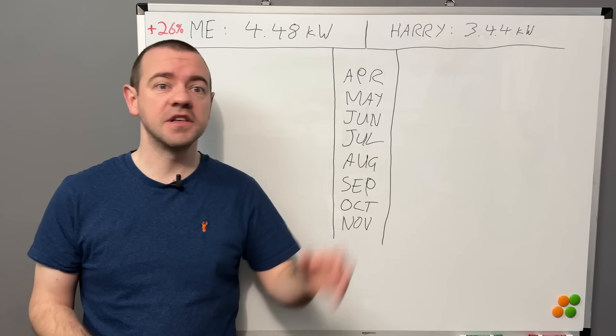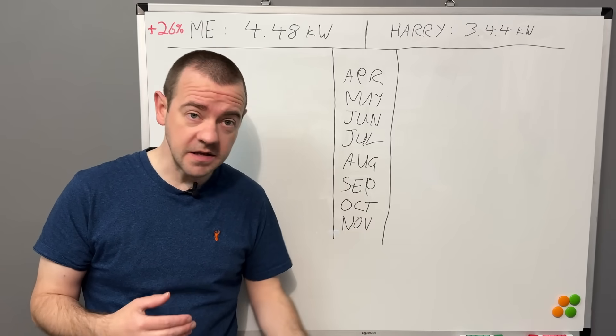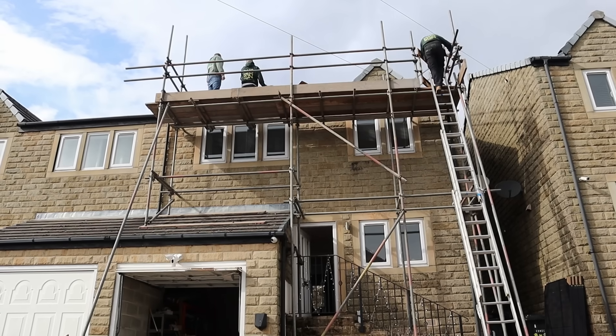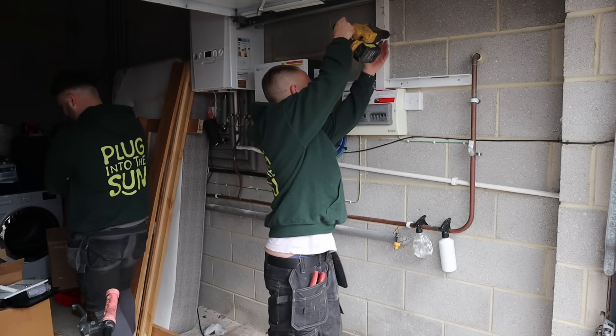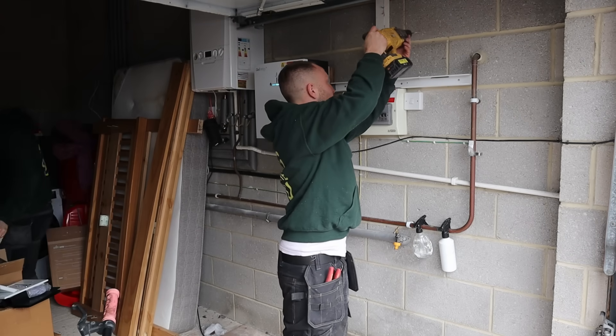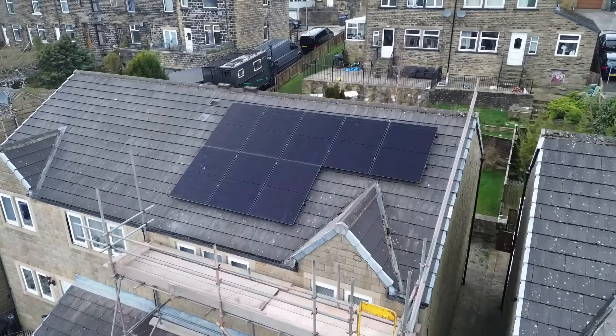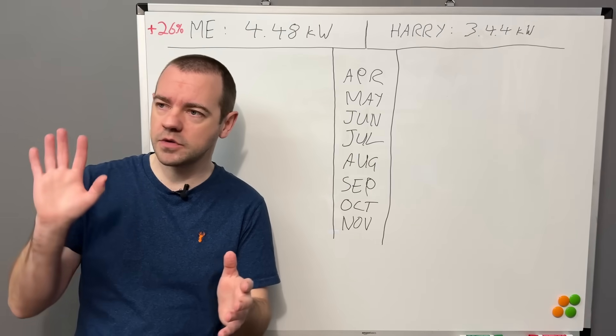But Harry went for a more expensive approach. He went for, I want someone to design the best system that I can get. So I'm in Yorkshire, he's in Yorkshire, we've both got east-west facing arrays. So they've gone, okay then we'll go for these panels instead of these panels, we'll go for this type of inverter instead of this inverter because of where you are, because of the way your house is facing. And essentially that should generate you more.